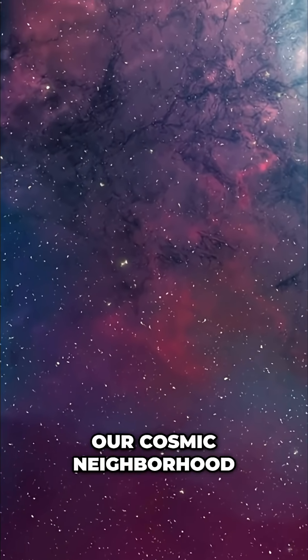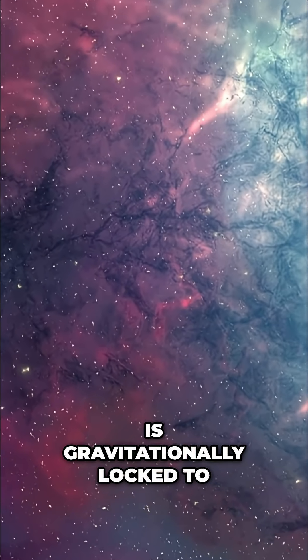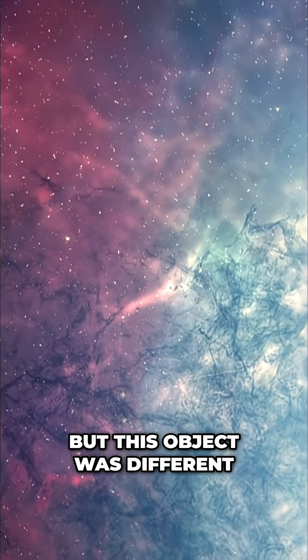Everything that belongs to our cosmic neighborhood, from Jupiter to the smallest asteroid, is gravitationally locked to our sun. They travel in closed loops, but this object was different.